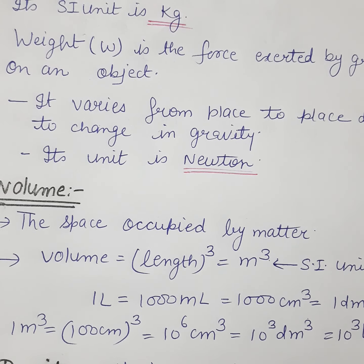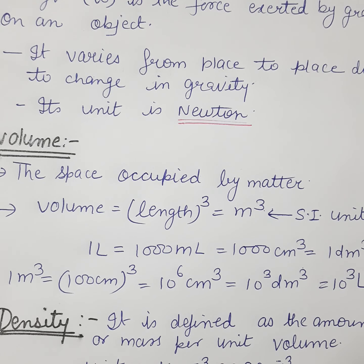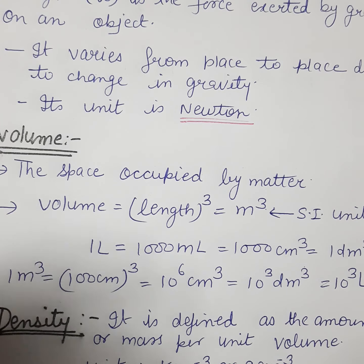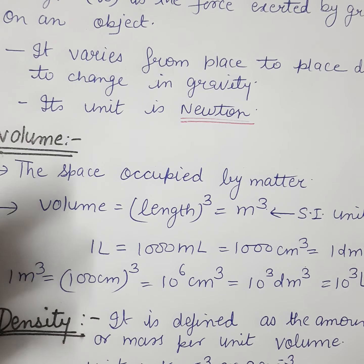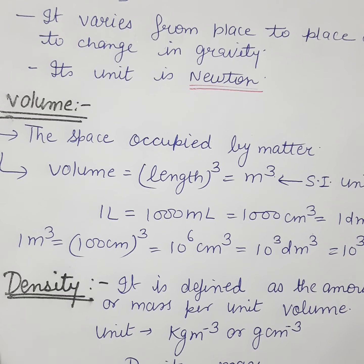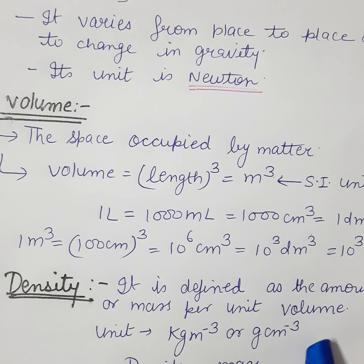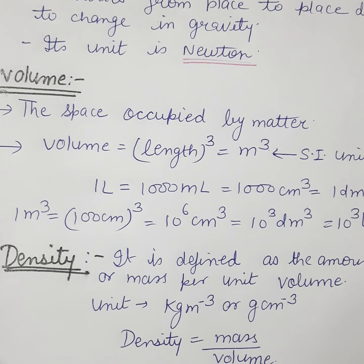Next is density, defined as the mass per unit volume. Density equals mass divided by volume. The SI unit of mass is kilogram and volume is meter cube, so the unit of density is kilogram per meter cube, or gram per centimeter cube.